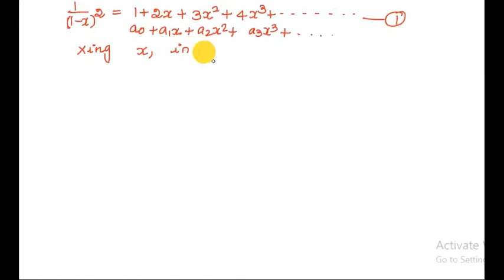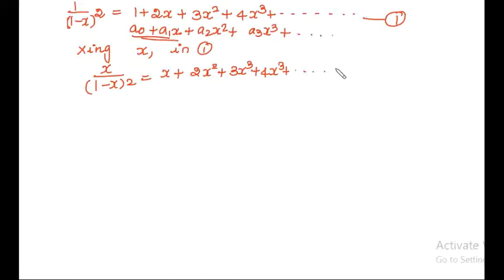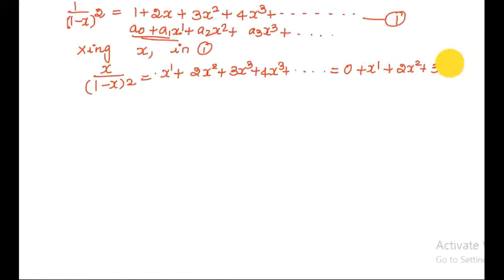So what is the answer I get? The answer is: x divided by (1 minus x) whole squared is equal to x plus 2x squared plus 3x cubed plus 4x to the 4th, and so on. This is the result — the closed form 1 divided by (1 minus x) squared.